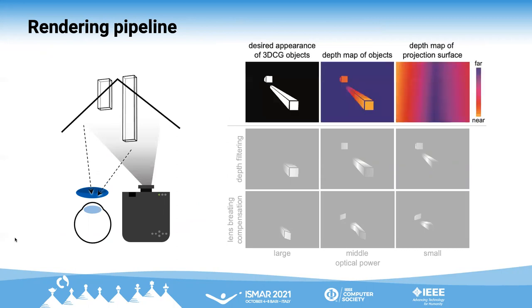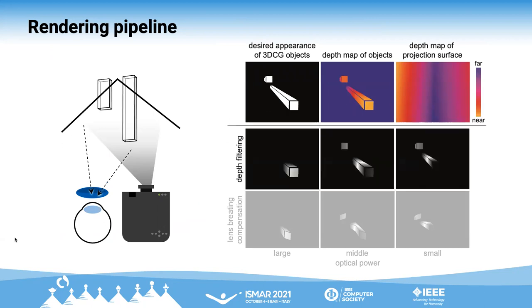First, we compute perspectively correct images for an observer's eye and simultaneously compute its depth map and the depth map of the projection surface. Then we divide the rendered image to separately project them at different ETL's optical power.